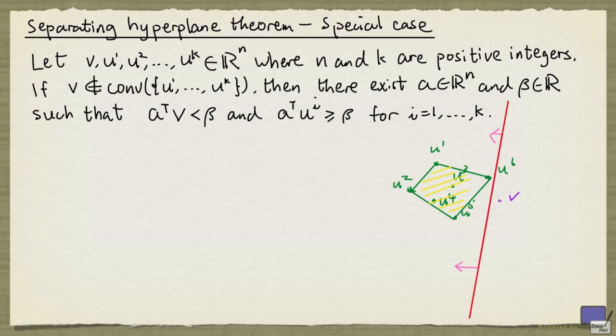So let's see how we can prove this. Recall that v is in the convex hull of u1 up to uk if and only if v can be written as a convex combination of u1 up to uk.